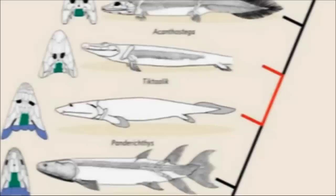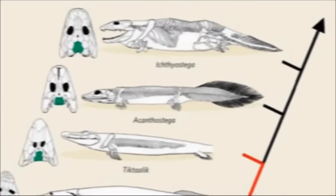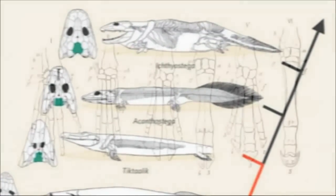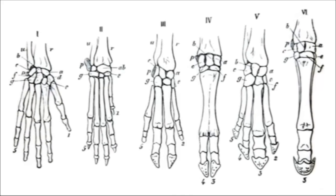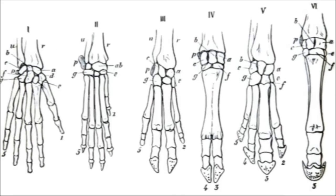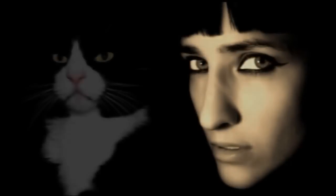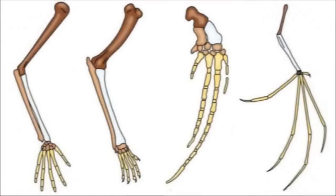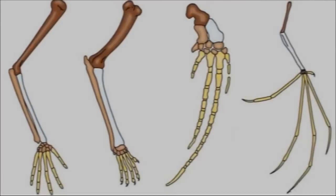A common theme within evolutionary biology is descent with modification, which is evidenced by observing anatomical similarities between species grouped in related taxonomic categories. For example, many mammals such as humans, cats, whales, and bats have closely related skeletal elements that make up their forelimbs, although these appendages have very different functions.